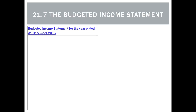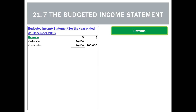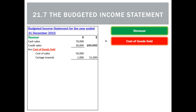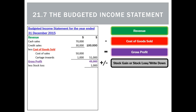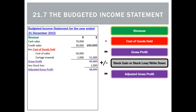When we do this report we'll put the word 'budgeted' at the start — you can see we've entered that up here — but otherwise the format stays the same. We will budget for our revenues, then our cost of goods sold to arrive at our budgeted gross profit, plus or minus any stock gains, stock losses, or write-downs, giving us our adjusted gross profit.